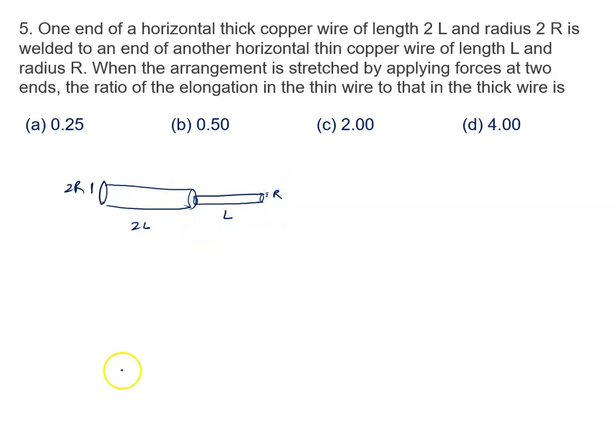When the arrangement is stretched by applying forces at the two ends, you are applying some force here and some force here. And this arrangement is stressed by applying force at two ends. The ratio of the elongation in thin wire to that in thick wire. This is wire number 1, this is wire number 2.